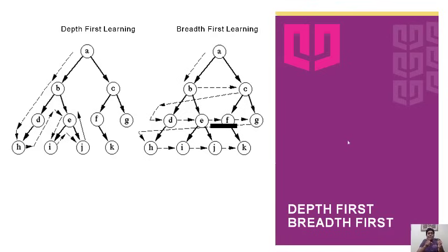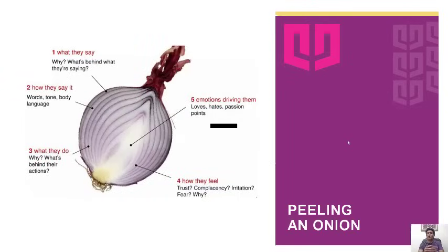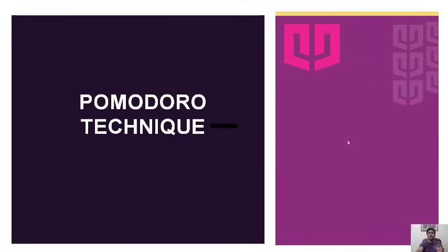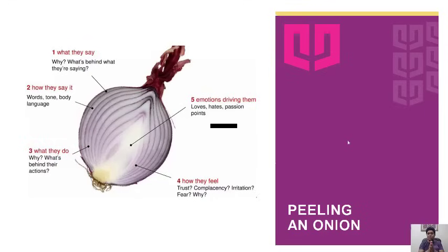The advantage of covering breadth first is that lots of things get covered as we move forward. After covering the width, we then have to cover the depth. That is how the good learners operate in this world. We have to peel the onion by reaching the core of the subject — cover width first, and thereafter in the revision phase, cover the depth of the subject.